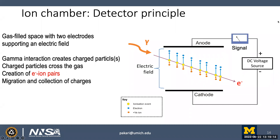The ion chamber: same concept — a gas-filled space with two electrodes and an applied electric field. A simplified apparatus has an anode, cathode, a DC voltage source, and a device to measure current. A gamma ray enters from the left, interacts via the photoelectric effect for example, liberating a high-energy electron that ionizes the gas volume, creating electron-ion pairs. The electrons migrate to the anode and ions to the cathode, producing a measurable signal across a resistive device.